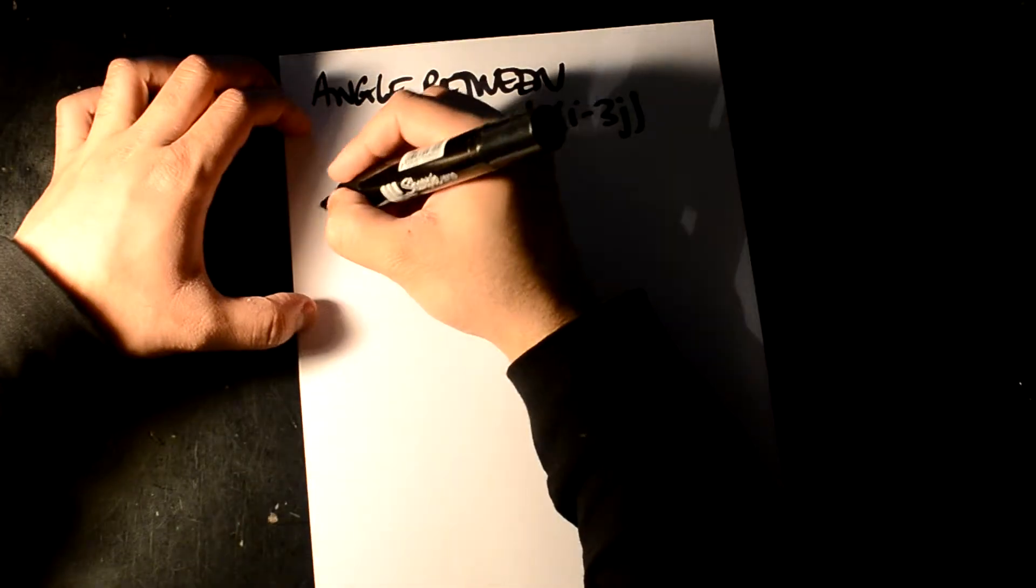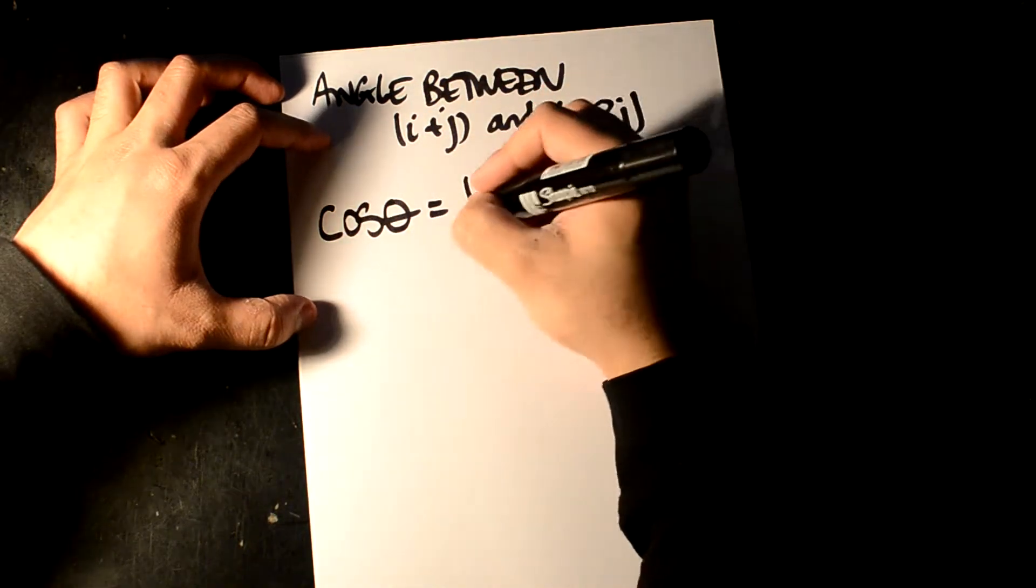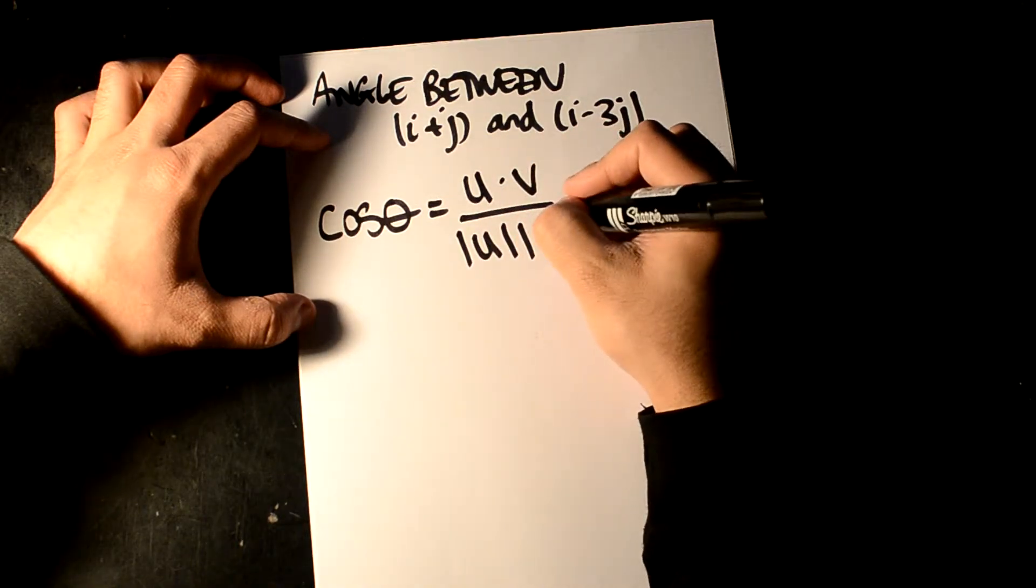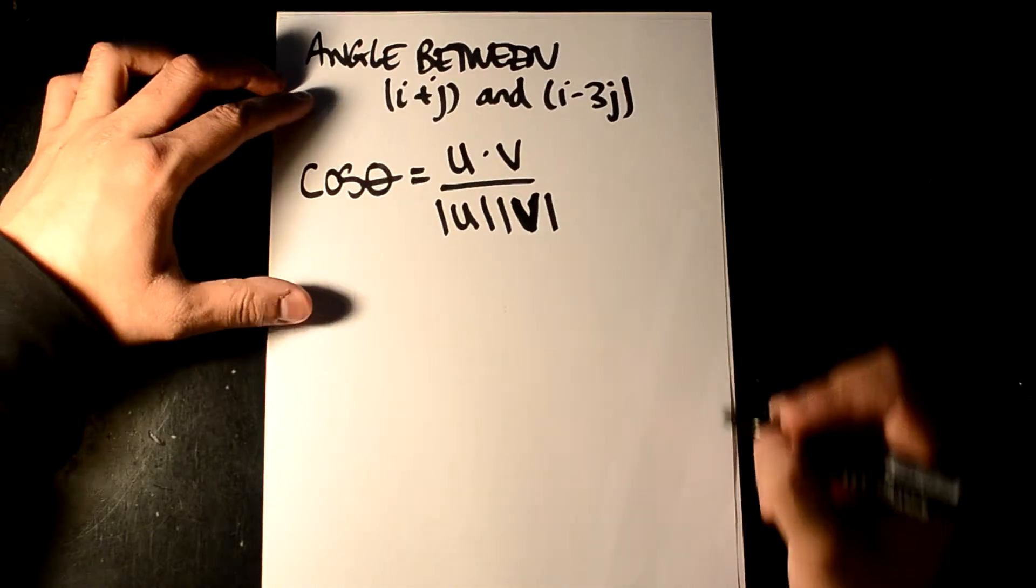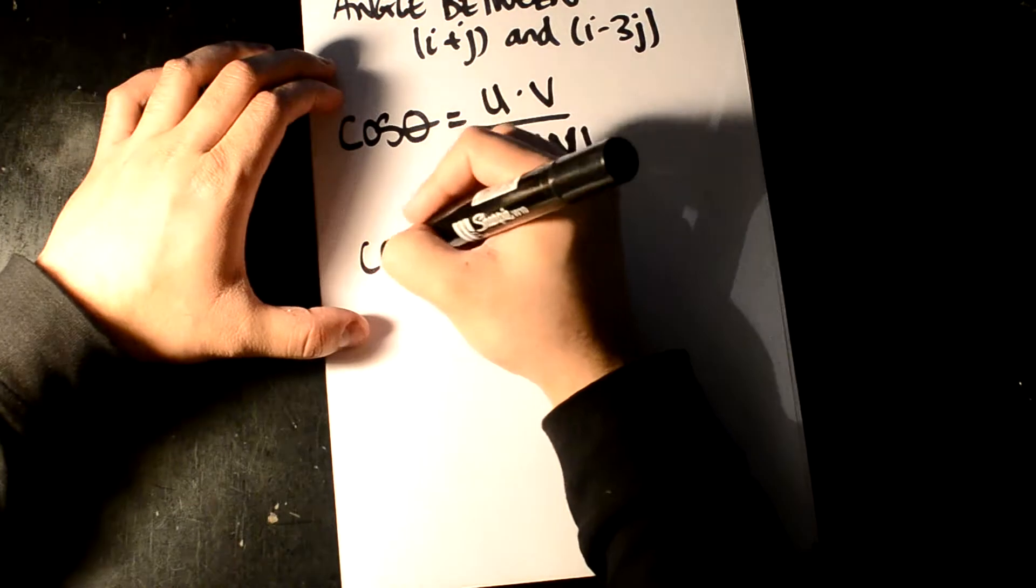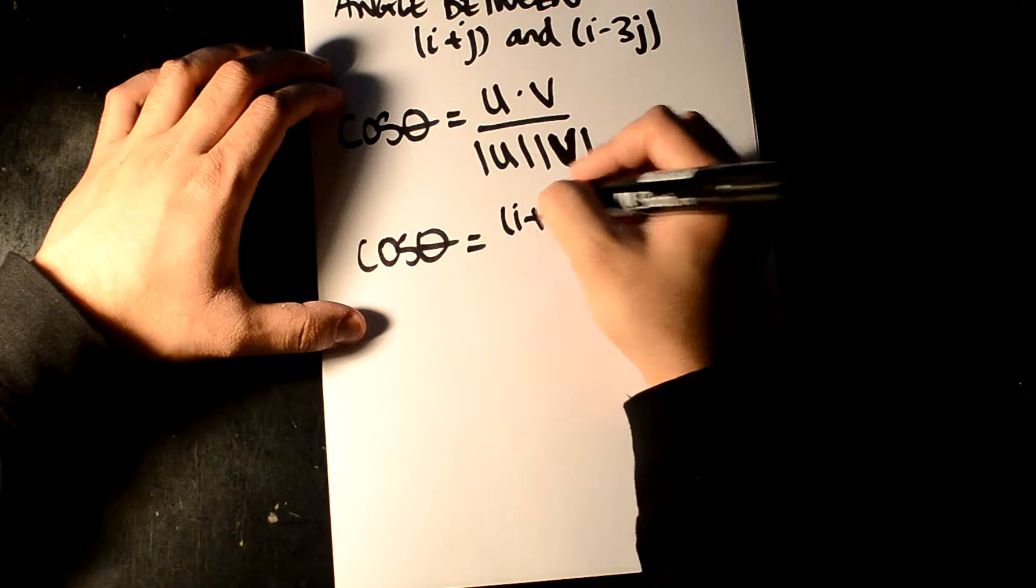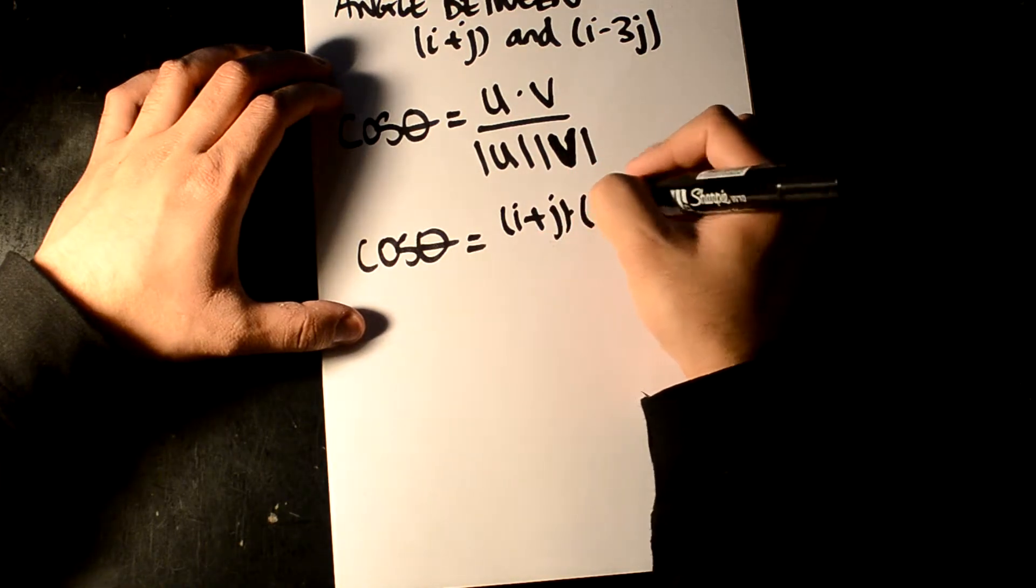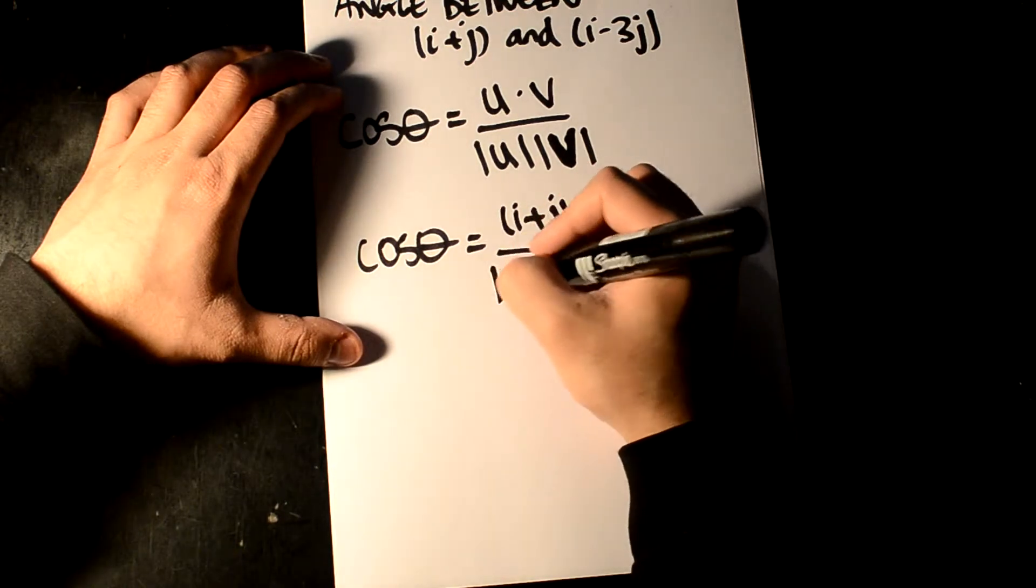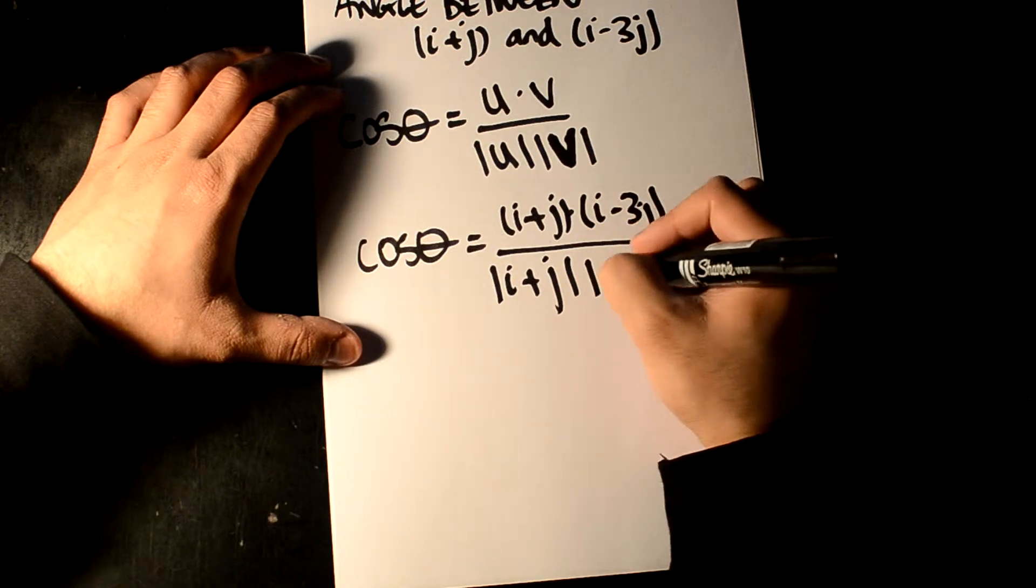There is an equation that you need to know, and it is cos theta equals u dot v over the modulus of u and the modulus of v. So what this basically means is cos theta is going to be i plus j dot i minus 3j divided by the modulus of i plus j and the modulus of i minus 3j.